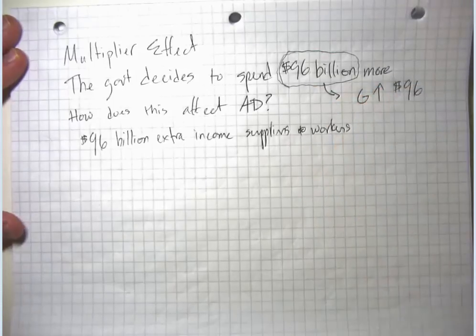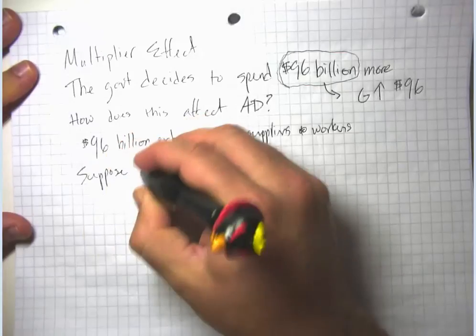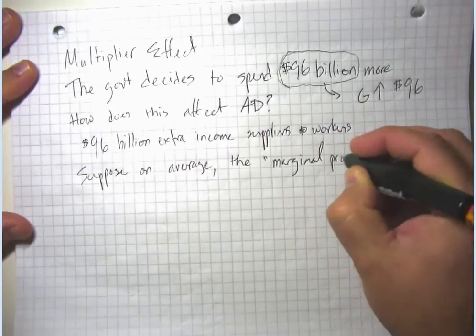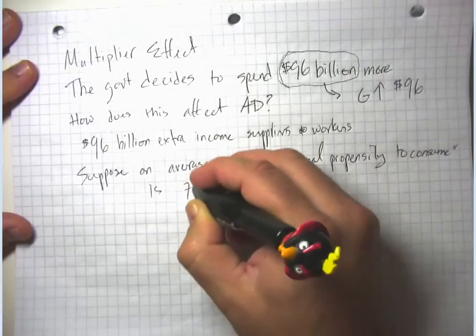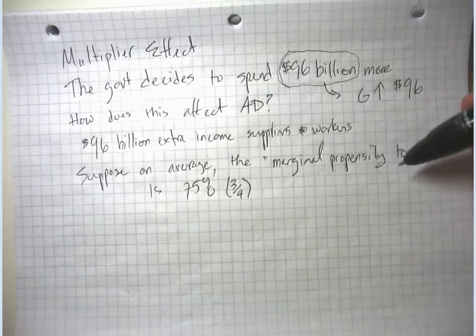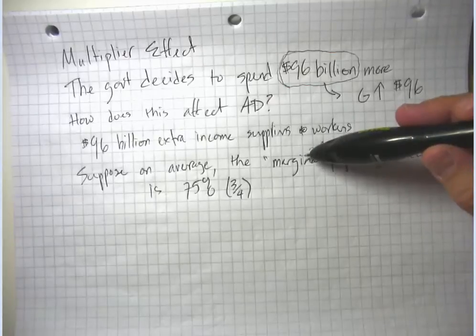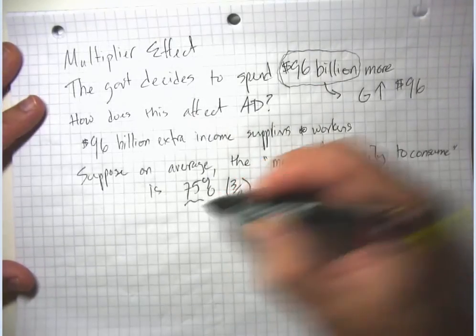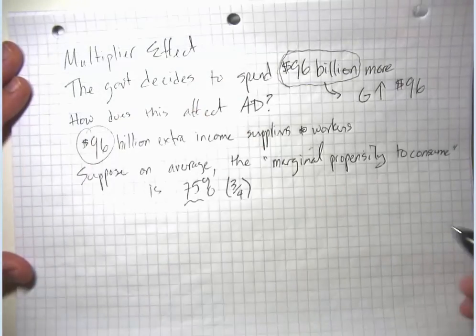Typically, when people get extra income, they spend that income — maybe not all of it, but some of it. Suppose, on average, what we call the marginal propensity to consume is 75%, which is the same as 3/4. The marginal propensity to consume is: if you got one extra dollar of income, what amount would you increase your consumption spending by? 'Marginal' means extra, 'propensity' means likelihood. We're saying people would raise their consumption spending by 75 cents for every dollar of income.